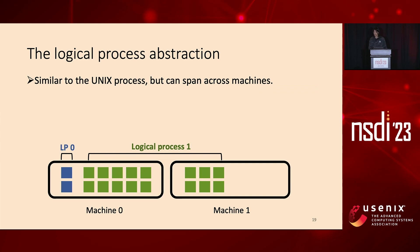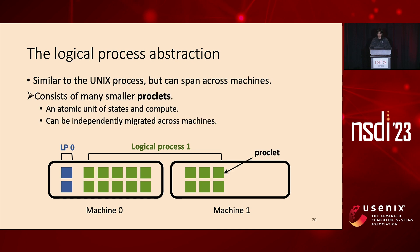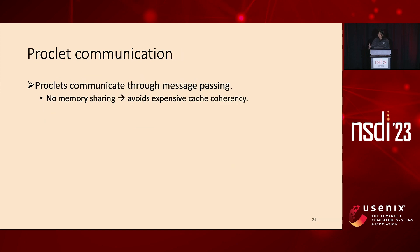Now let's dive into the design of Nu. It provides a programming abstraction called the logical process, similar to the standard Unix process, but able to span across machines and be executed in a distributed fashion. A logical process consists of many smaller units called proclets. A proclet is an atomic unit of state and compute — it has its own heap, stack, and threads, and can be independently scheduled and migrated between machines. Proclets communicate with each other through message passing; we disallow direct memory sharing across proclets to avoid expensive cache-coherency traffic.